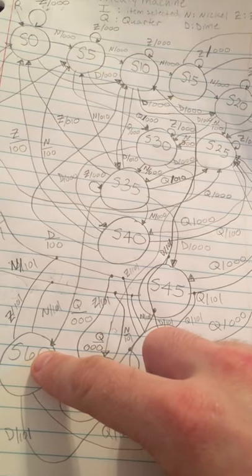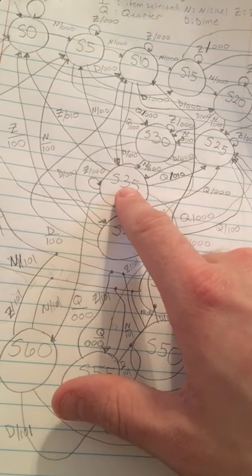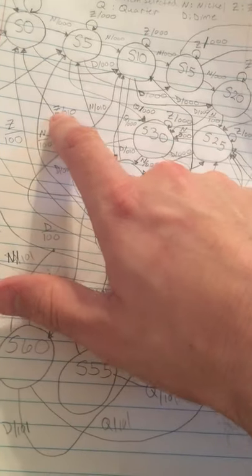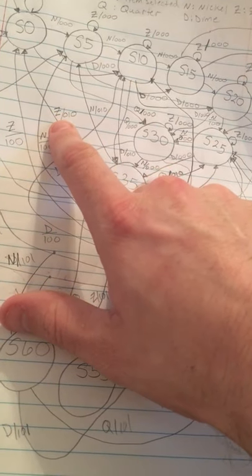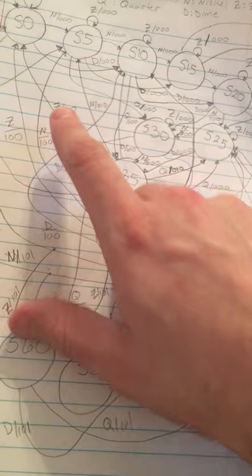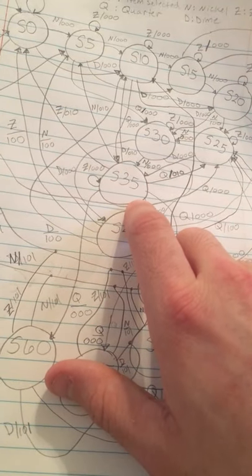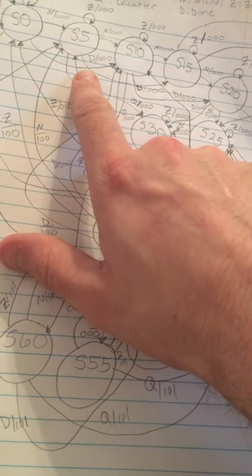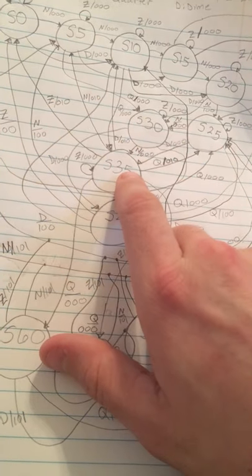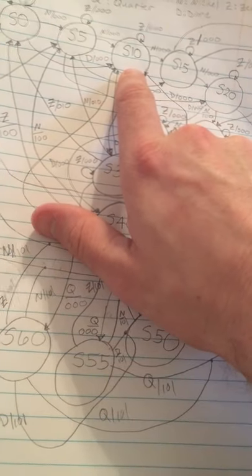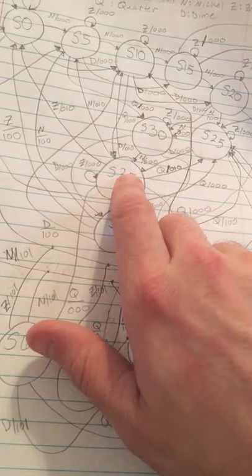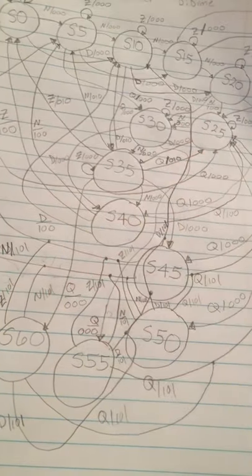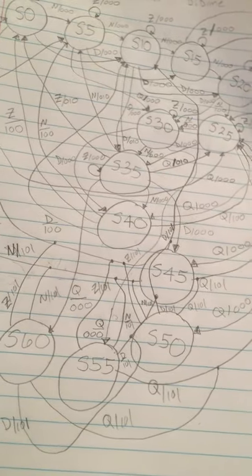In state fifteen, if Z is enabled, stay in state fifteen. If a nickel, go to state twenty. If a dime, state twenty-five. If a quarter, state forty — outputs zero, zero, zero. In state twenty, if Z is enabled, stay in state twenty. If a nickel, go to state twenty-five. If a dime, state thirty. If a quarter, state forty-five — outputs zero, zero, zero. In state twenty-five, if Z is enabled, stay in state twenty-five. If a nickel, go to state thirty. If a dime, state thirty-five. If a quarter, state fifty — outputs zero, zero, zero. In state thirty, if Z is enabled, stay in state thirty. If a nickel, go to state thirty-five. If a dime, state forty. If a quarter, state fifty-five — outputs zero, zero, zero. In state thirty-five and item two is selected: if Z is enabled, stay in state thirty-five. If a nickel, go to state forty. If a dime, state forty-five. If a quarter, state sixty — outputs zero, zero, zero. If item one is selected in state thirty-five and Z is enabled, go to state zero with output zero, one, zero. If a nickel, go to state five with output zero, one, zero. If a dime, go to state ten. If a quarter, go to state twenty-five — outputs zero, one, zero.